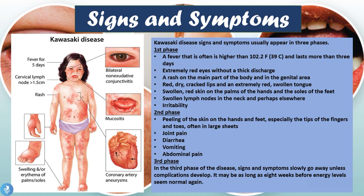In the third phase, the signs and symptoms slowly go away unless severe complications develop. One such complication is coronary artery aneurysms — specific dilated portions of the arteries that develop due to the underlying inflammation within these vessels. It may be as long as eight weeks before energy levels seem normal again in these children.